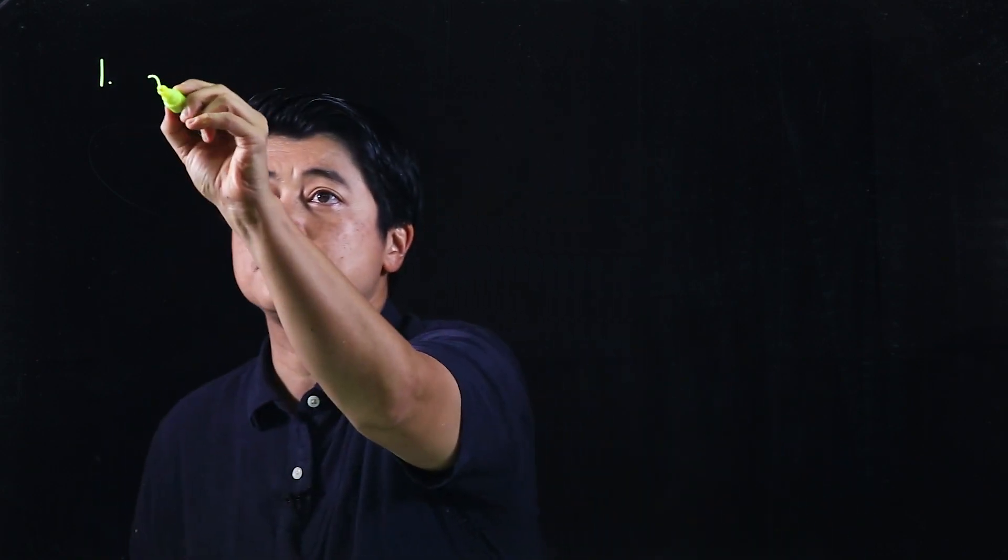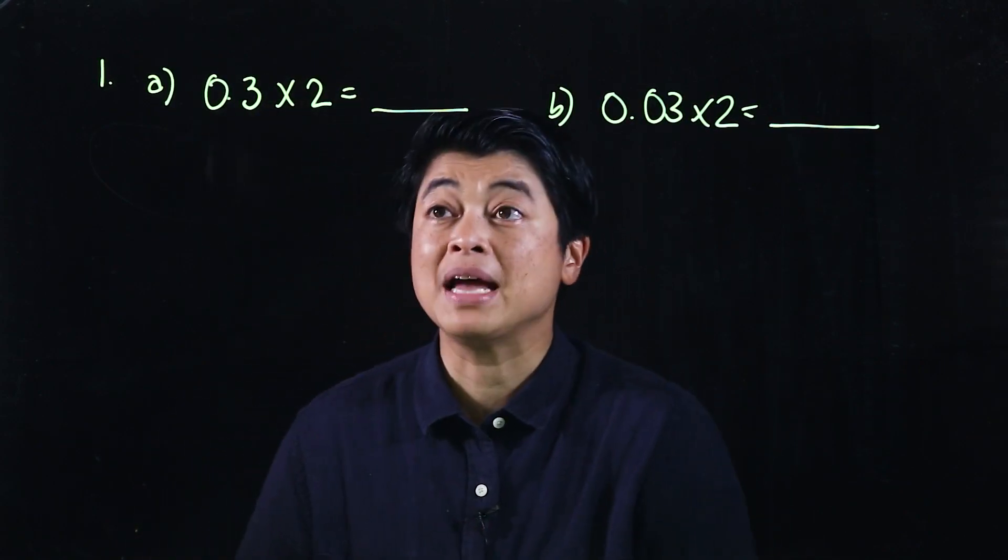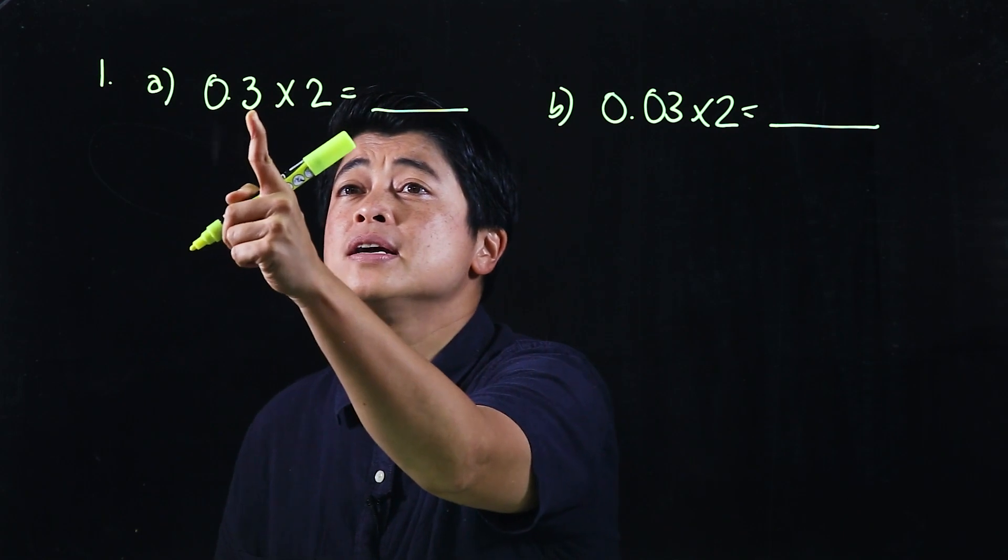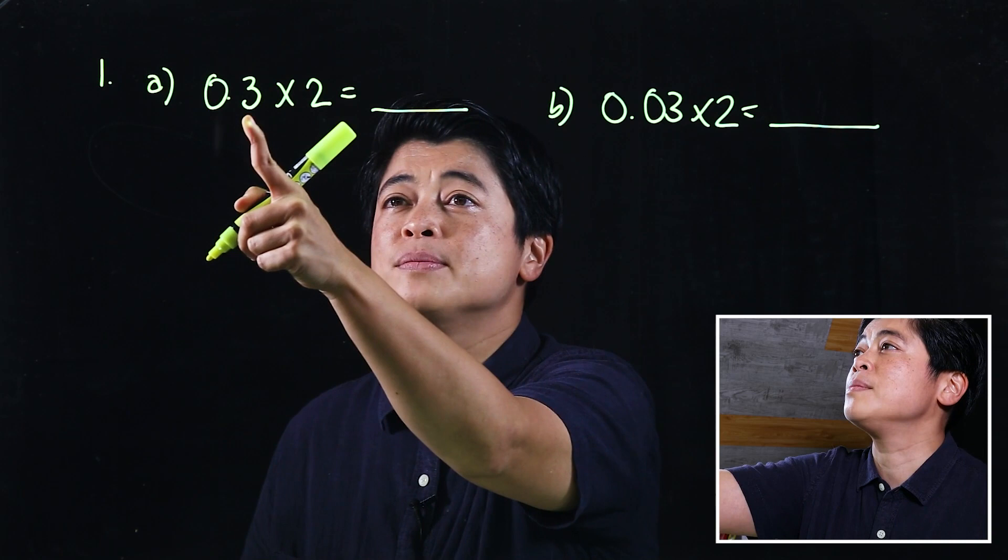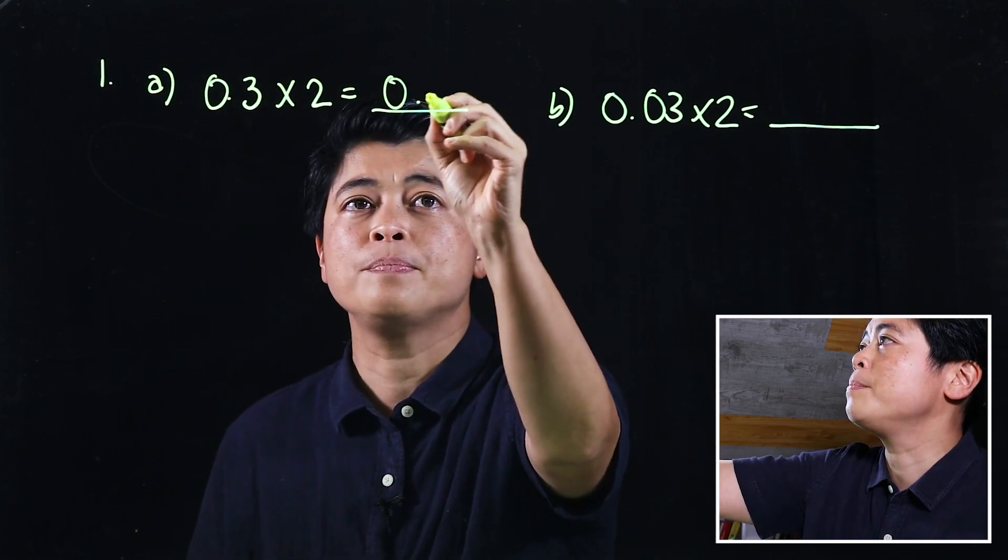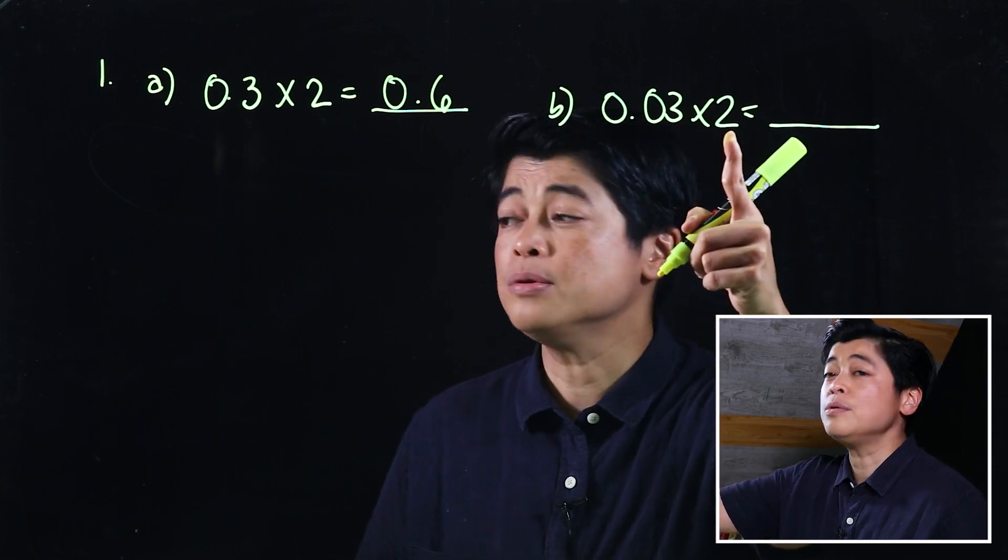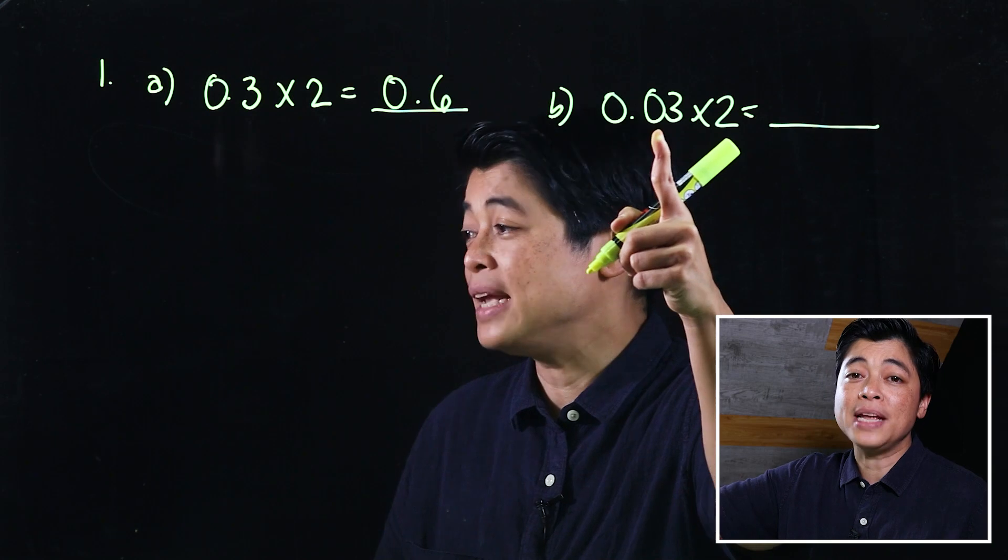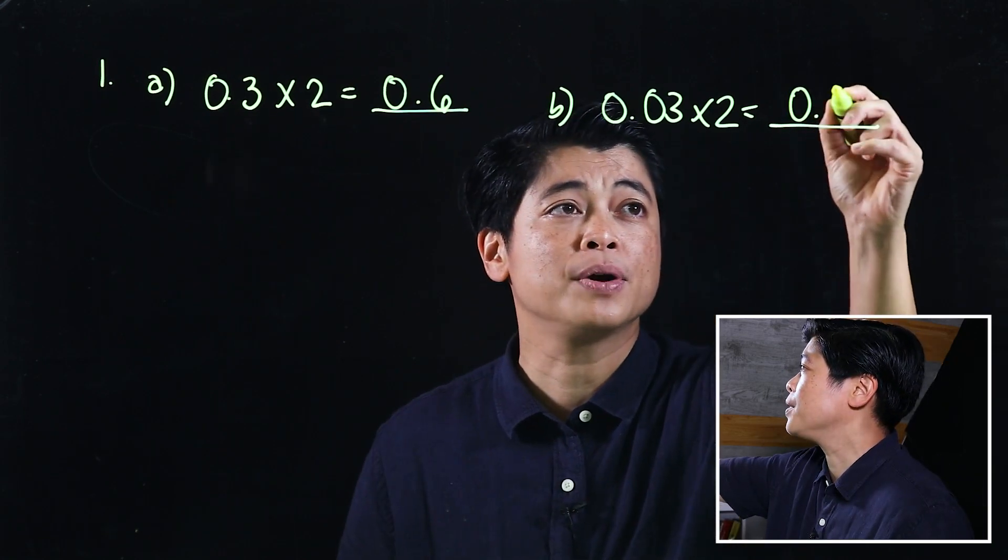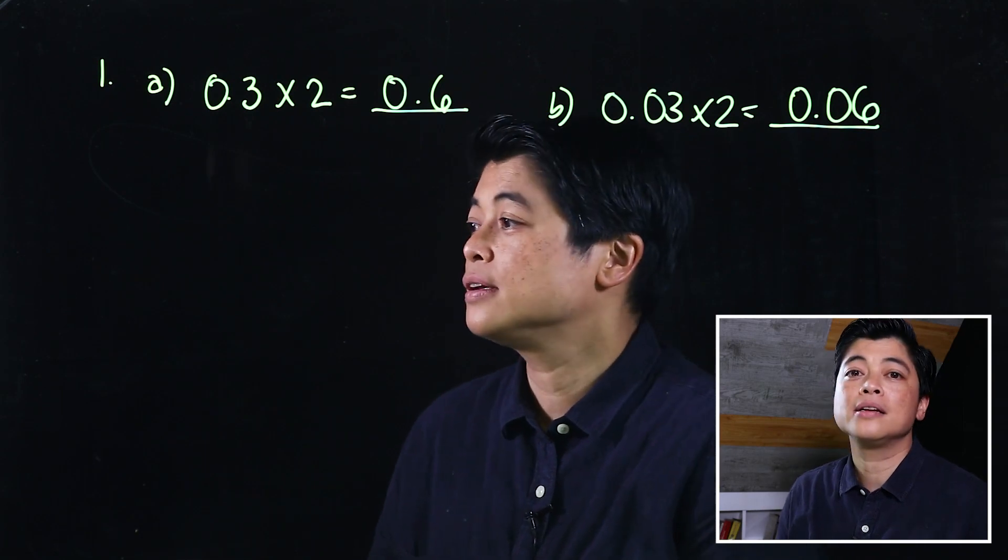The first number is mental multiplication. Why do I say mental multiplication? Because 3 times 2 is 6 and there's only one decimal place, so that's 0.6. With the second one, 3 times 2 is also 6, but here there's two decimal places so that means 0.06. So if we can do it mentally, why not do it mentally?